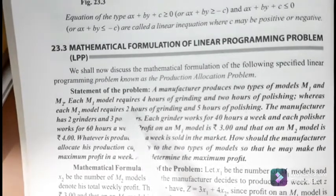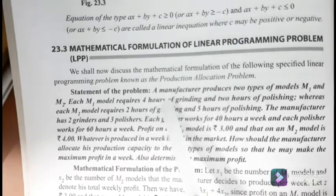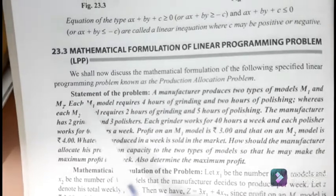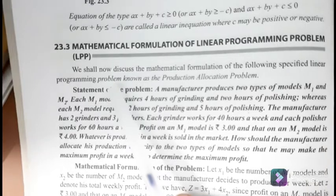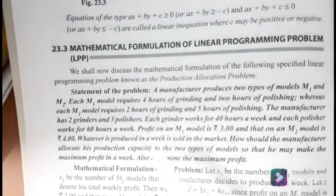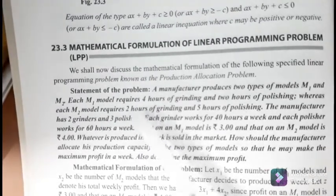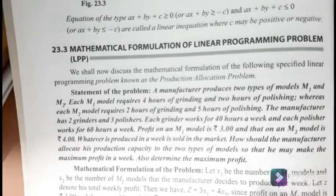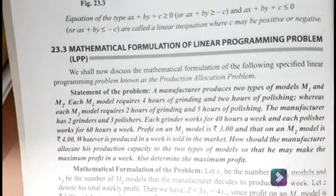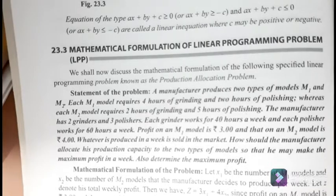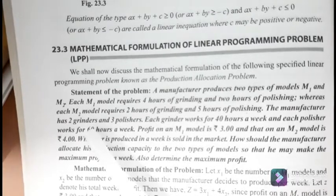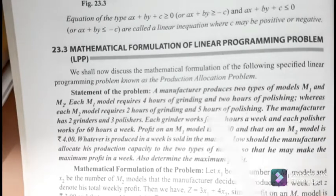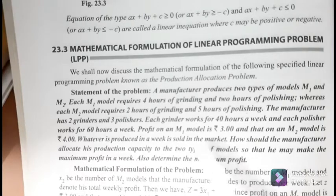Here we will take an example statement problem. A manufacturer produces two types of models M1 and M2. Each M1 model requires 4 hours of grinding and 2 hours of polishing, whereas each M2 model requires 2 hours of grinding and 5 hours of polishing. So the grinding and polishing hours are different for the two models.